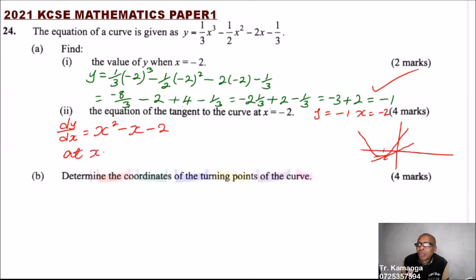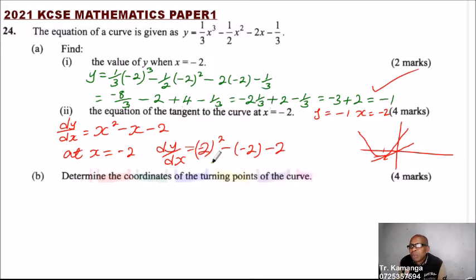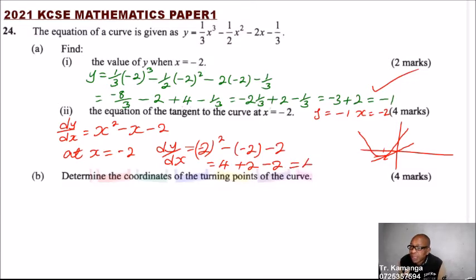At x equals minus 2, then the gradient, which is dy/dx, you substitute minus 2 in place of x: that is minus 2 squared minus minus 2, minus 2. So that is 4, and minus and minus gives you positive 2, minus 2. This equals 4. So the gradient is 4.